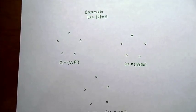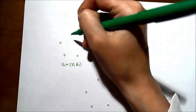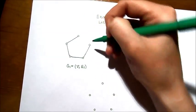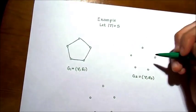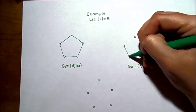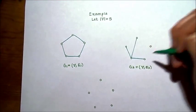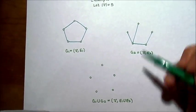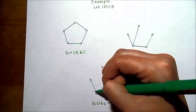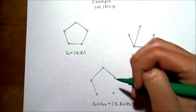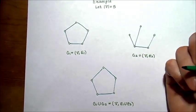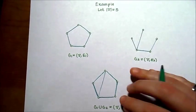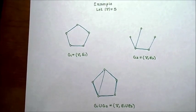Let's consider the case of five vertices. We'll let G1 be a graph with five edges connecting all the vertices in a cycle, and we'll let G2 be a tree with highest degree 3. Then the union of G1 and G2 will include all the edges from G1 as well as all the edges from G2. Where they overlap, we'll just consider it as a single edge.